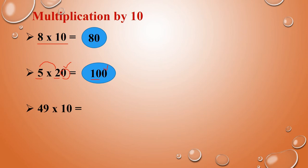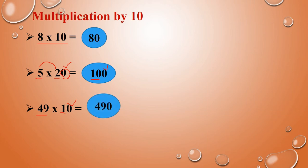Next: 49 into 10. Same way, multiply the number alone. 49 into 10 means 49 into 1, that is 49. Here there is a zero, so that zero you have to include it. It will come 490.